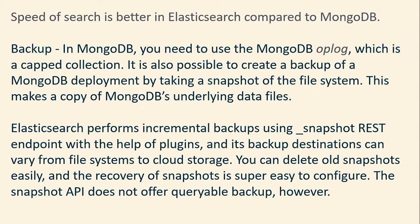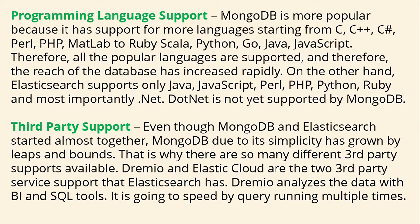The Snapshot API does not offer query backup. MongoDB is more popular because it supports many languages including Java, Perl, PHP, Matlab, Go, JavaScript and more. All popular languages are supported, increasing the database's reach rapidly. On the other hand, Elasticsearch supports Java, JavaScript, Perl, PHP, Python, Ruby and .NET. Notably, .NET is not yet supported by MongoDB.